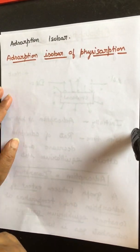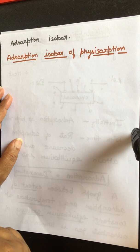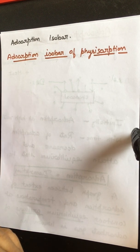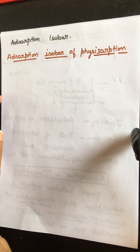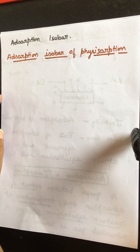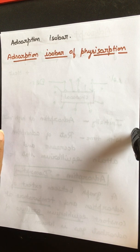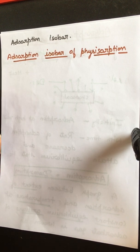Now, adsorption isobar for physisorption. We have studied that on the basis of forces of attraction, adsorption is divided into two types: physical adsorption, also known as physisorption, and chemical adsorption, also known as chemisorption. We will see the adsorption isobar for both cases.